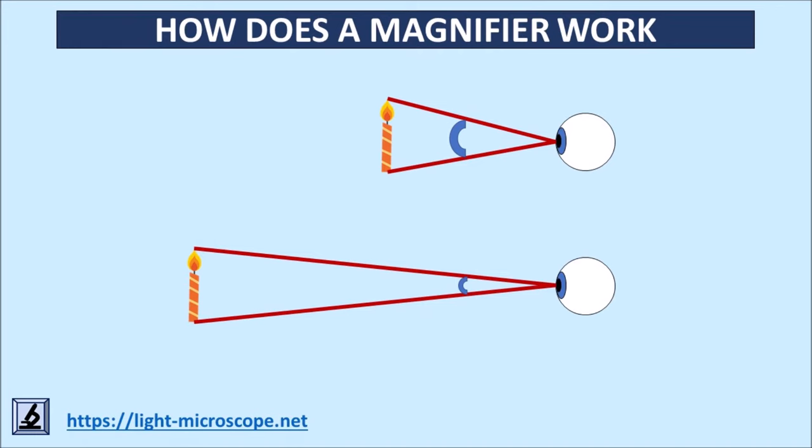When we look at an object, our eye absorbs the light reflected by it. We perceive its size through the rays of light that enter the eye from the top and the bottom points in a straight line.